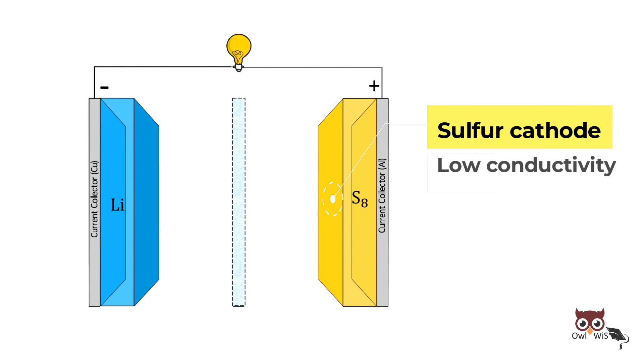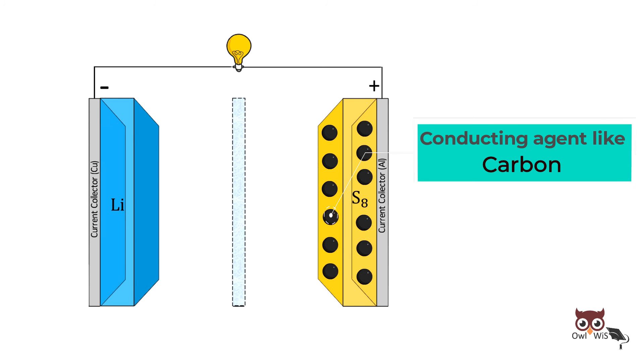Also, sulfur cathodes have low conductivity, requiring extra mass for a conducting agent like carbon, increasing cost.